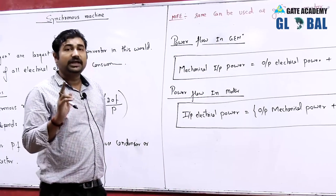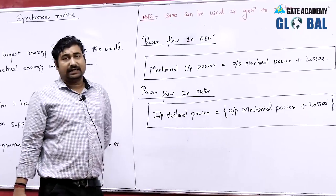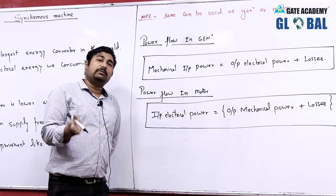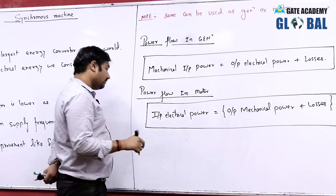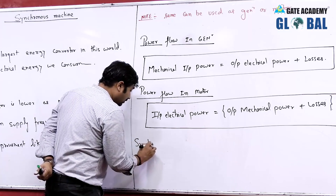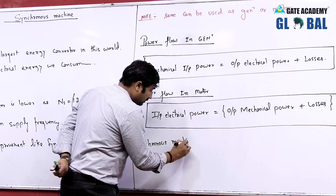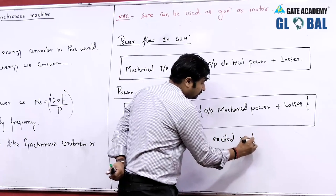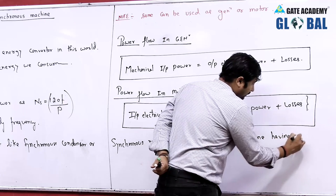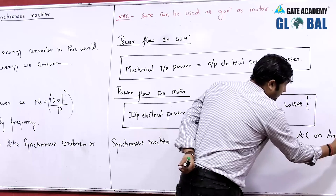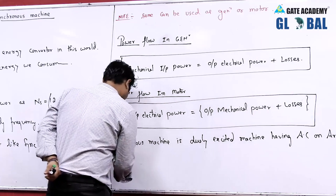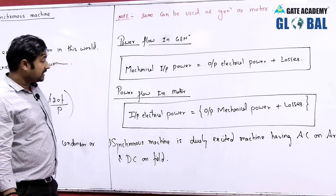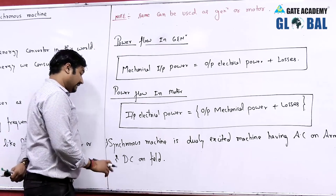Synchronous machines are dually excited machines. Each and every generator is dually excited — one side is field, the other is mechanical. But especially for the synchronous machine, whether operating in motoring mode or generating mode, it is a dually excited machine. The synchronous machine is a dually excited machine having AC on the armature (stator) and DC on the field (rotor).